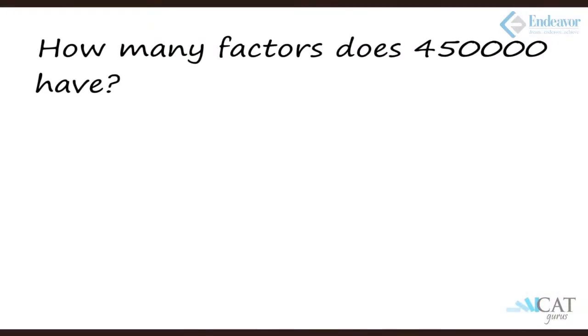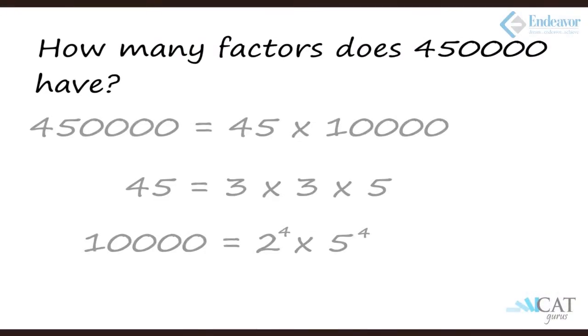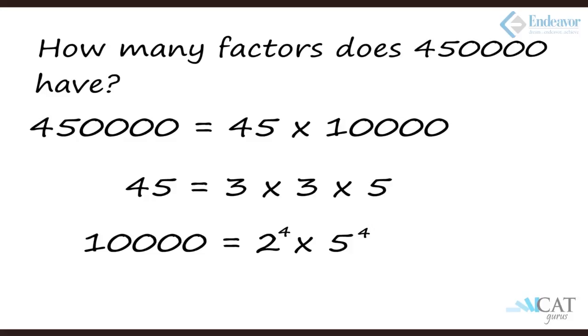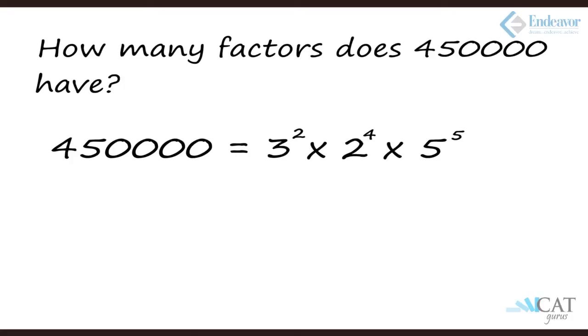Let's take a bigger number: 4,50,000. How many factors does 4,50,000 have? Let's break it first: 45 × 10,000. 45 is 3 × 3 × 5, and 10,000 is 2⁴ × 5⁴. Combining both, we get 3² × 2⁴ × 5⁵.